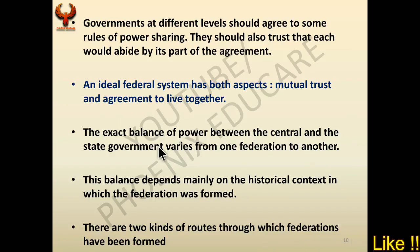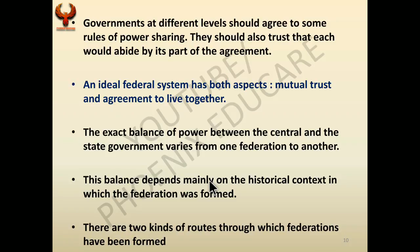The exact balance of power between the central and state governments varies from one federation to another. In India, the central government is stronger, but in the case of America, state governments are stronger than the central government. This balance mainly depends on the historical context in which the federation was formed. There are two different kinds of routes through which federations have been formed.